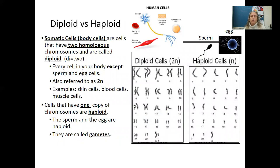We need to understand the difference between diploid versus haploid cells. Somatic cells are also known as body cells — both terms mean the same thing and you'll see either used on your test. Somatic or body cells have two homologous chromosomes and are called diploid, with 'di' meaning two. Every cell in your body except sperm and egg cells is diploid, referred to as 2N. Examples include skin cells, blood cells, and muscle cells.